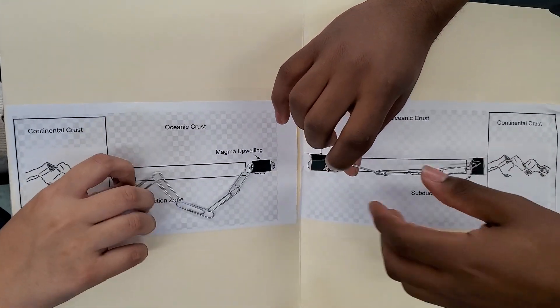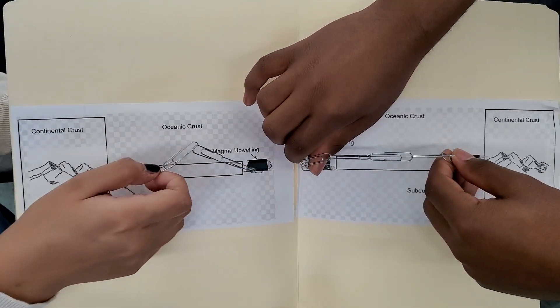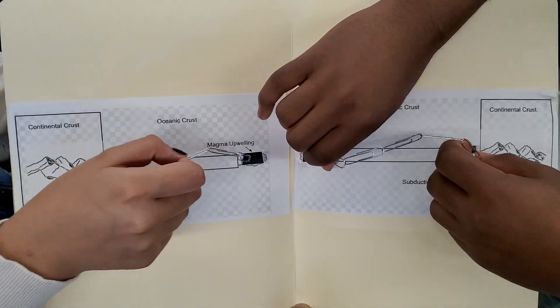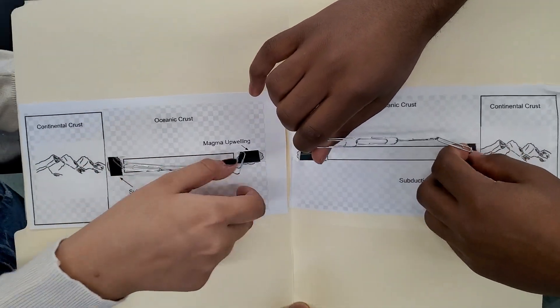What's the name of what's it called when gravity pulls tectonic plates into the earth? Slab pull. Slab. Can you say that? Slab pull. Slab pull.